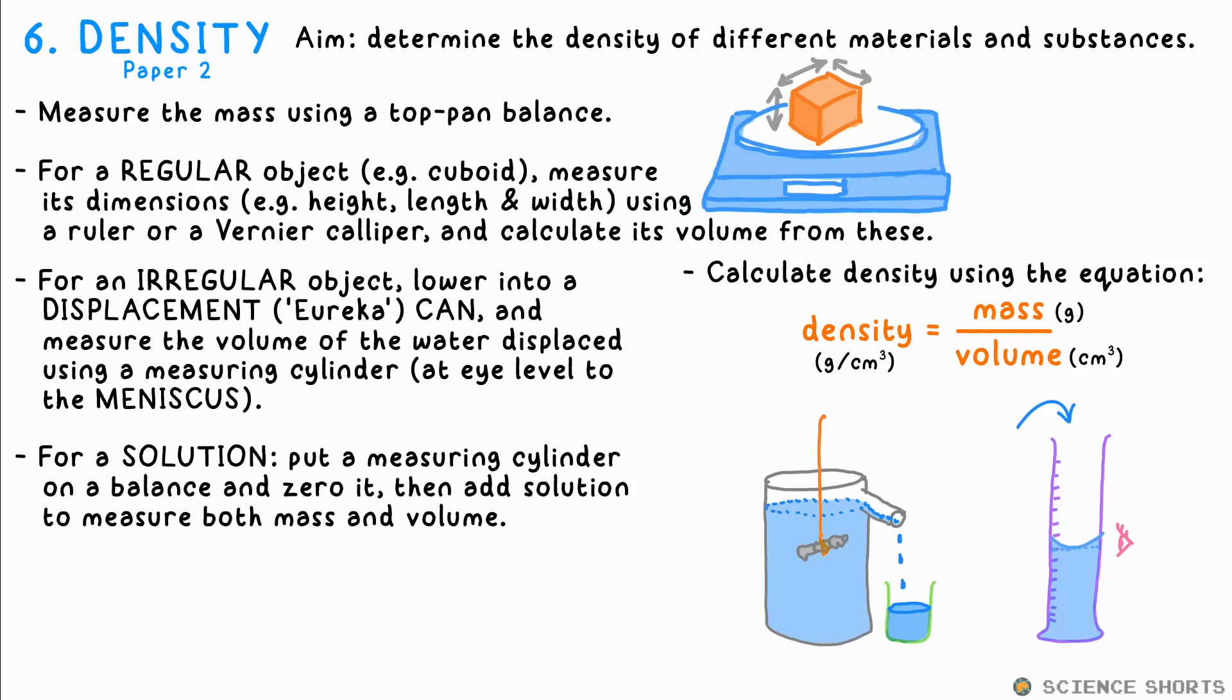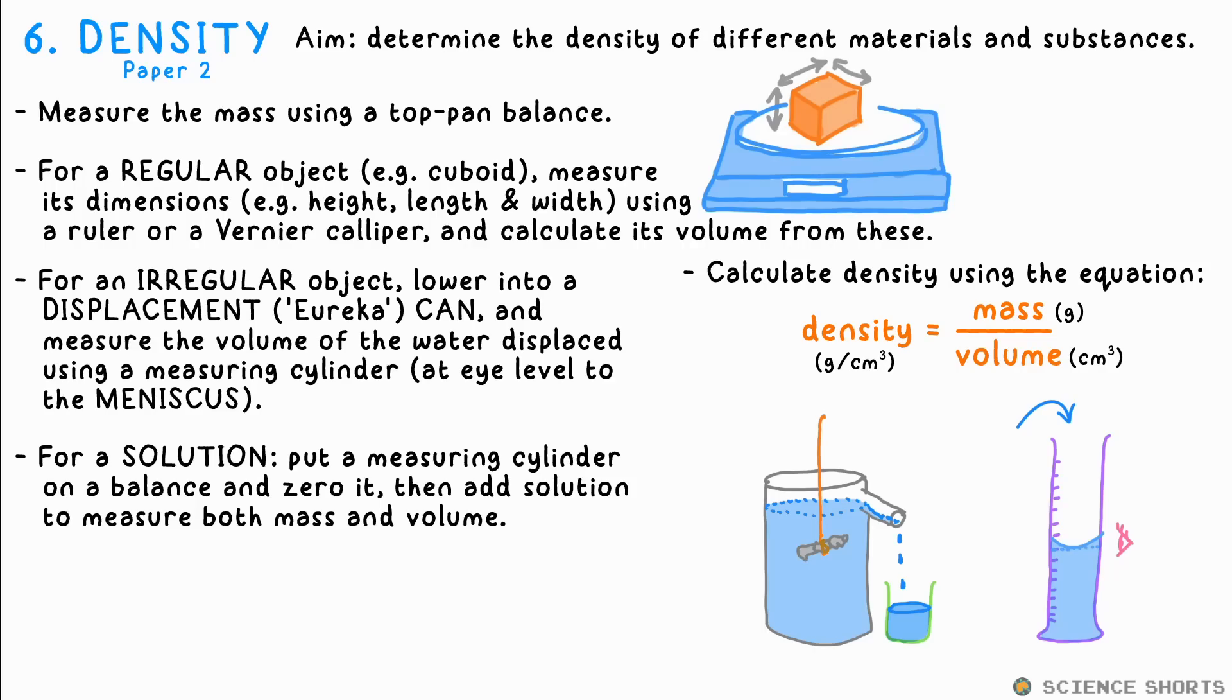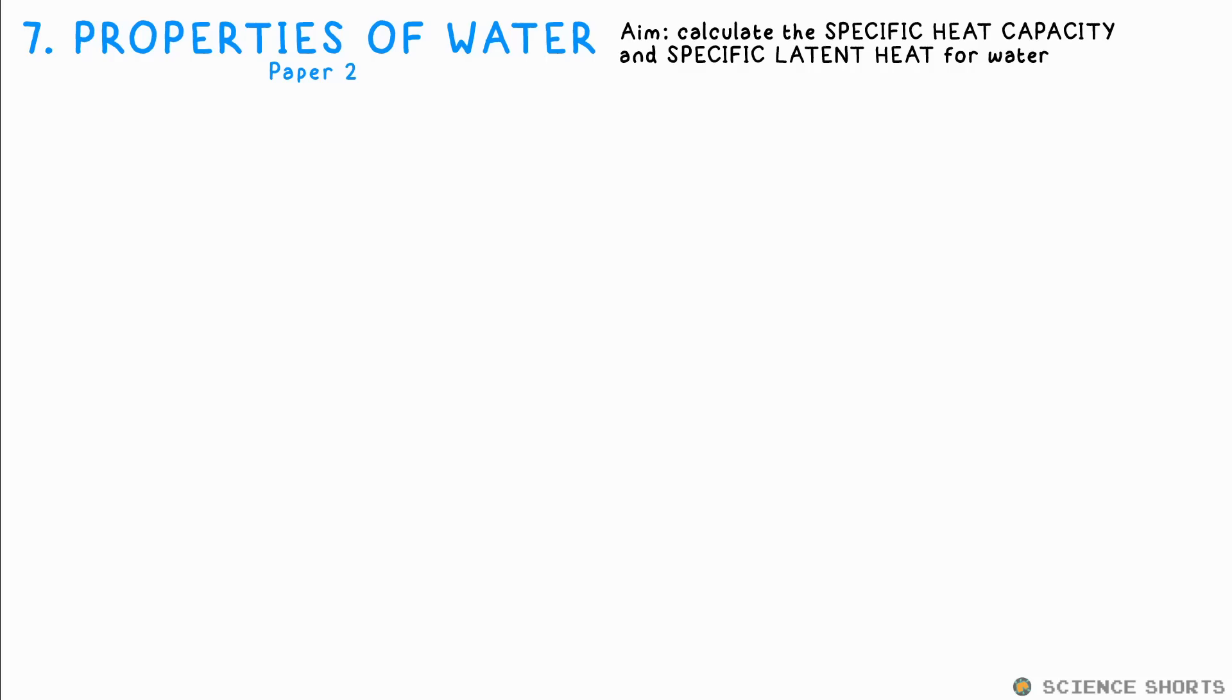You can find the density of a solution by putting a measuring cylinder on a balance and zeroing, then pouring in the solution, allowing you to find the mass and volume. Pure water has a density of one gram per centimetre cubed. So if you find that the density of say a salt solution is 1.2 grams per centimetre cubed, that means that the concentration of the salt is 0.2 grams per centimetre cubed.